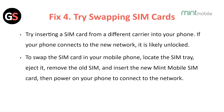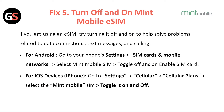Fix 5: Turn off and on the Mint Mobile eSIM. If you are using an eSIM, try toggling it off and on to help solve problems related to data connections, text messages, and calling. For Android, go to your phone Settings, then select SIM Cards and Mobile Network, and select the Mint Mobile SIM. Toggle it off and on to enable the SIM card. For iOS, go to Settings, then Cellular, then Cellular Plans. Select the Mint Mobile SIM card and toggle it on and off.